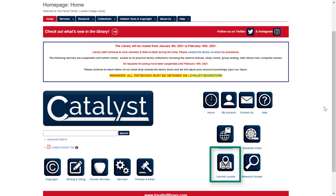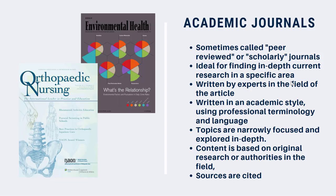If you're not sure what the key trade journals are for your field, ask your instructor or check in with the library. Academic journals, sometimes called peer-reviewed or scholarly journals, are ideal for finding in-depth current research in a specific area. These articles go through a review process before they're published, which ensures that the research is of high quality.